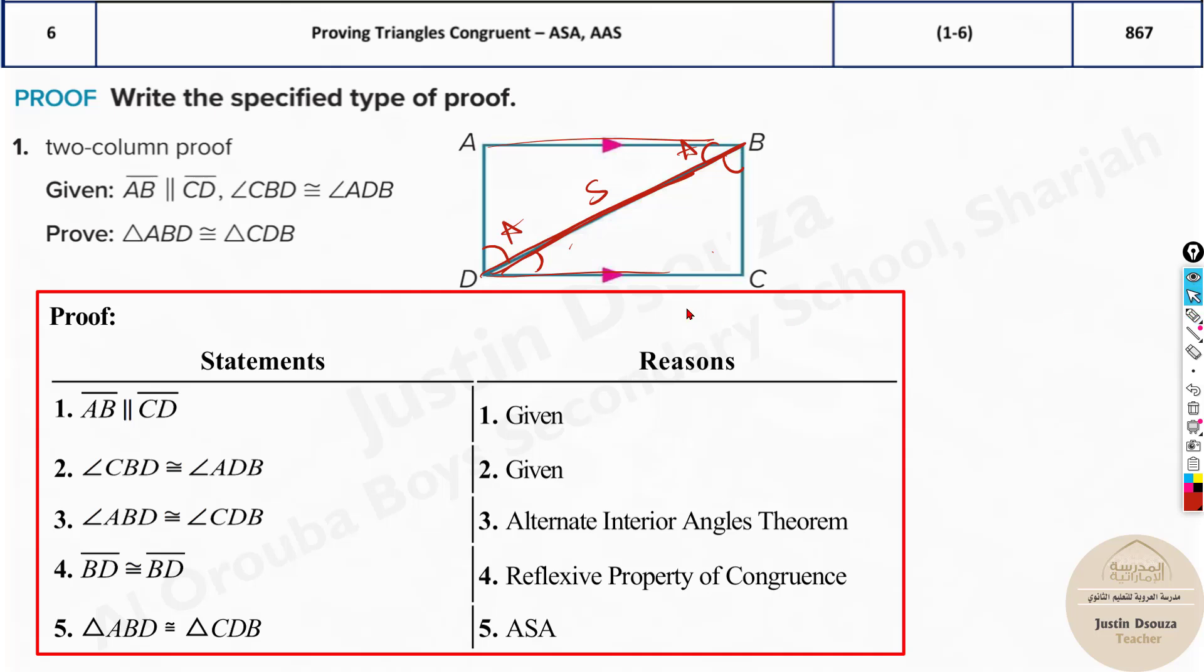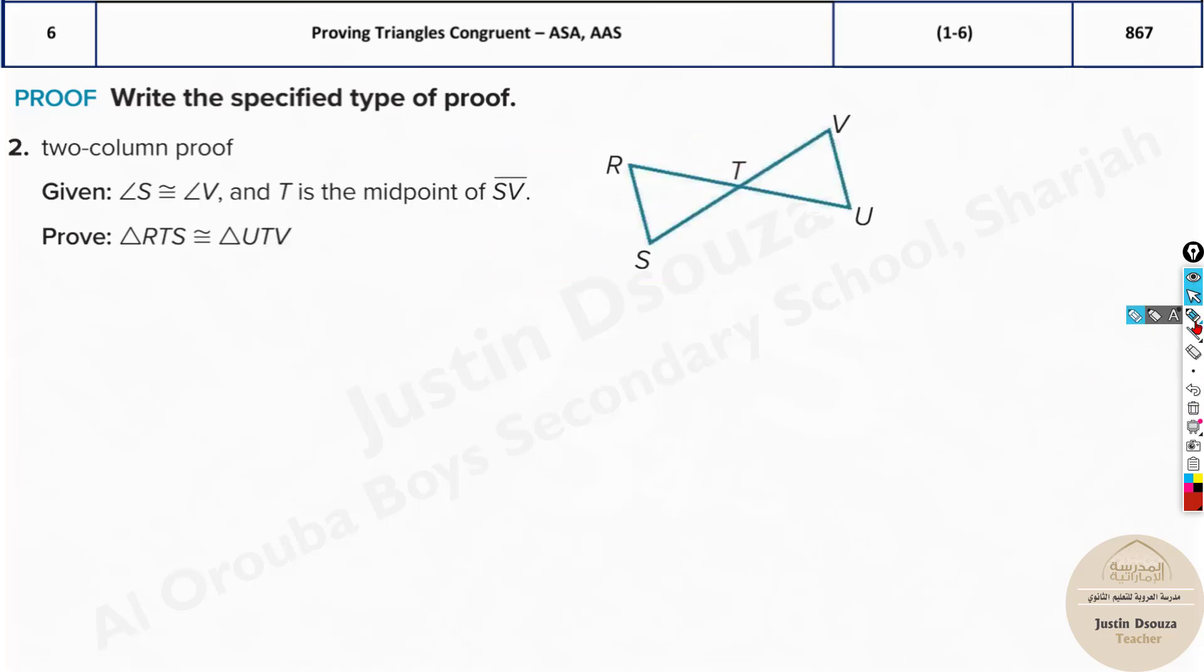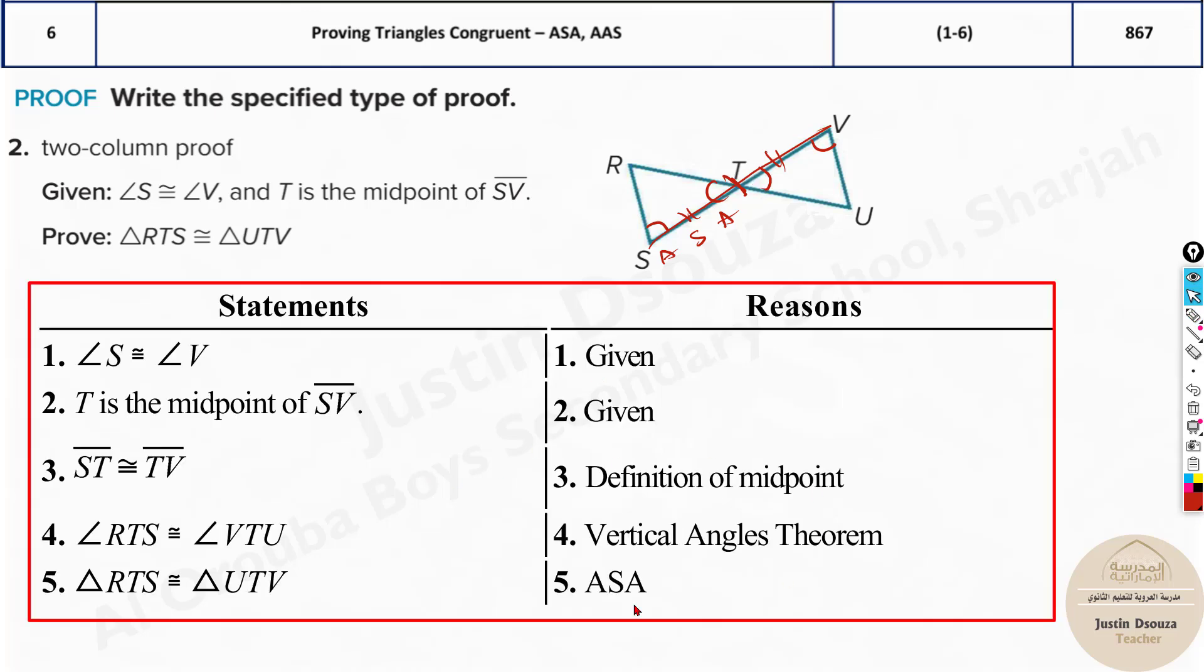Similarly, you can solve the others. Let's look at this one. What is given? S is congruent to V, so those both are equal. T is the midpoint of SV, that means these both lines are congruent because a midpoint cuts into two equal parts. Now angle T and T are vertical angles, so they are equal to each other. So again, ASA postulate is used.